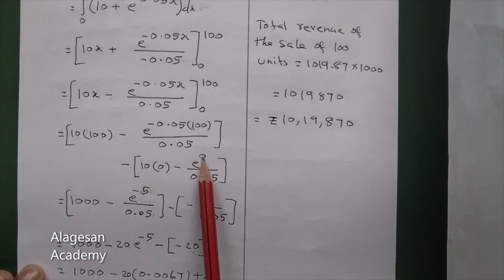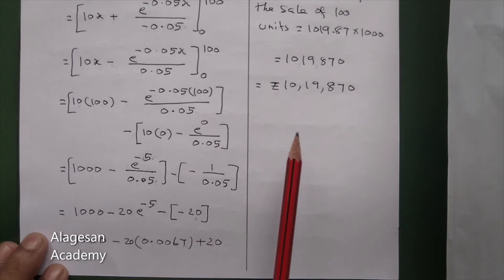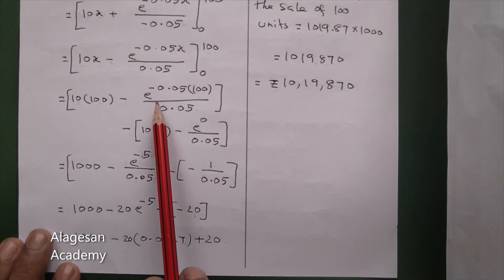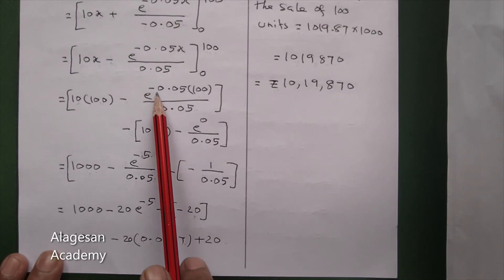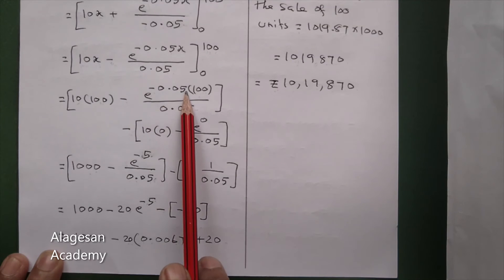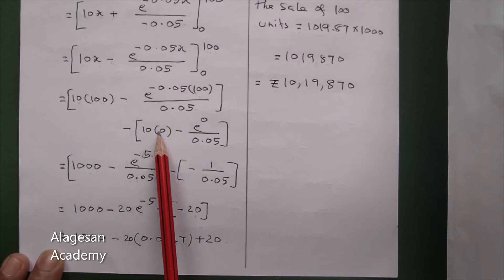Next, 10 into 100 equals 1000 minus, it becomes minus 0.05 into 100 equals minus 5, so e power minus 5 by 0.05 minus 10 into 0.